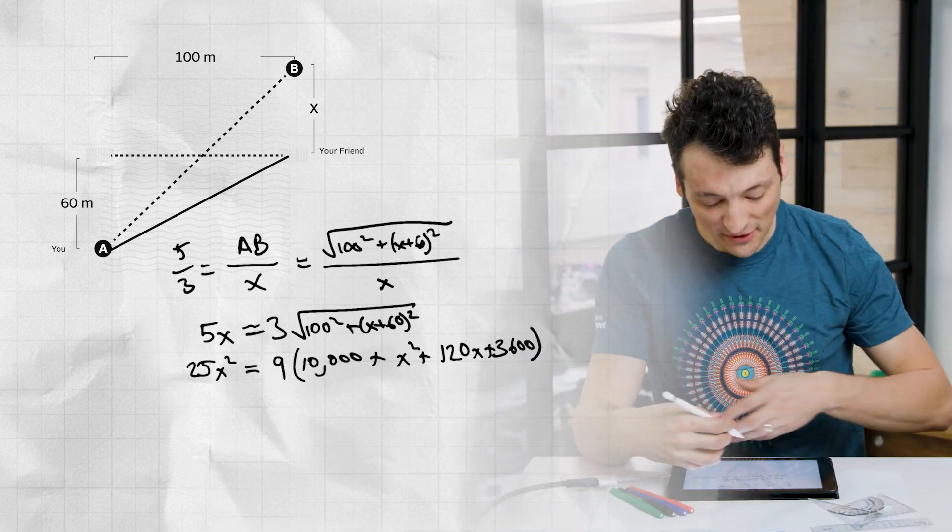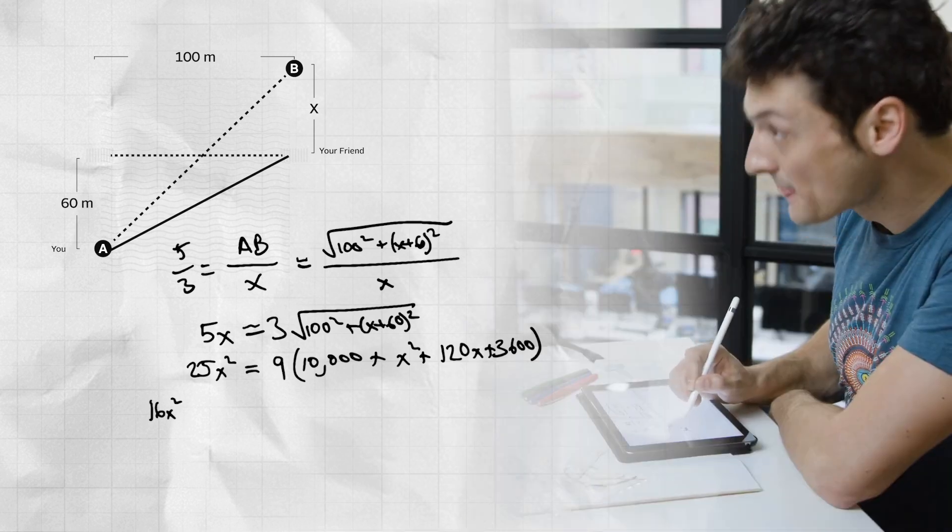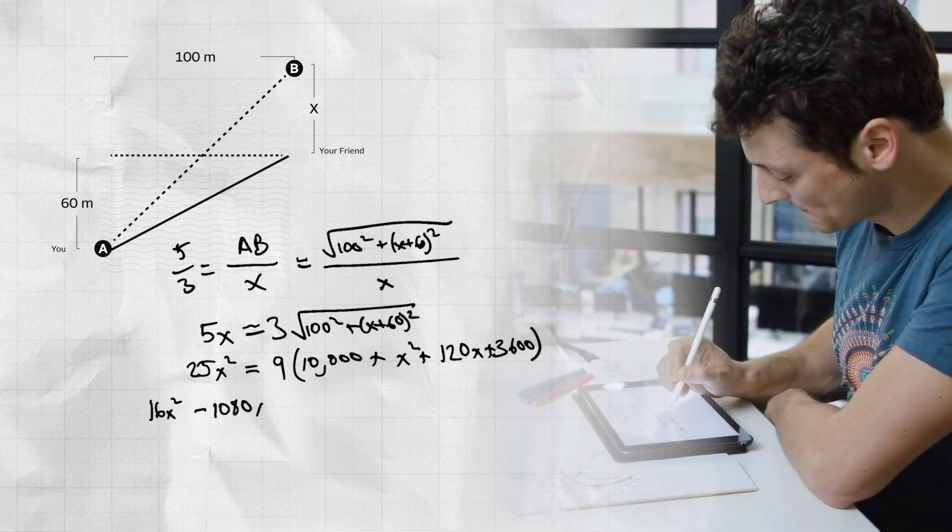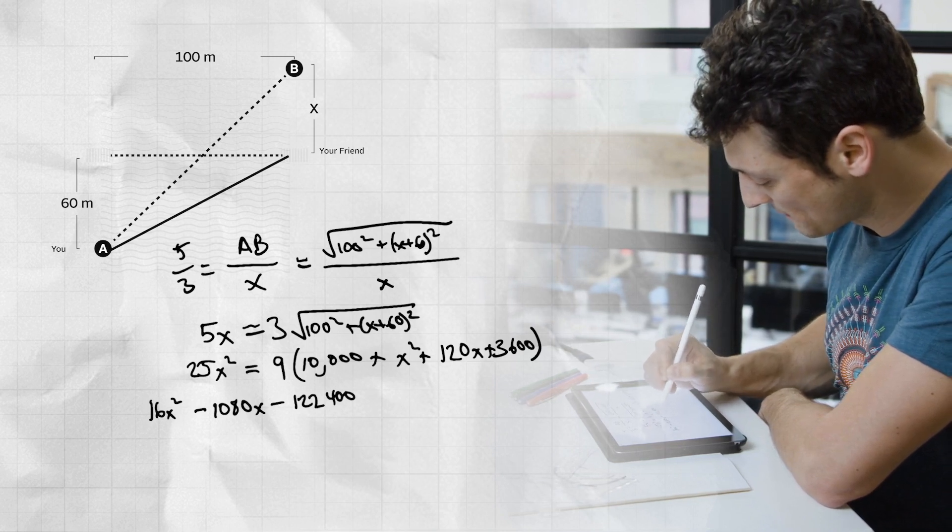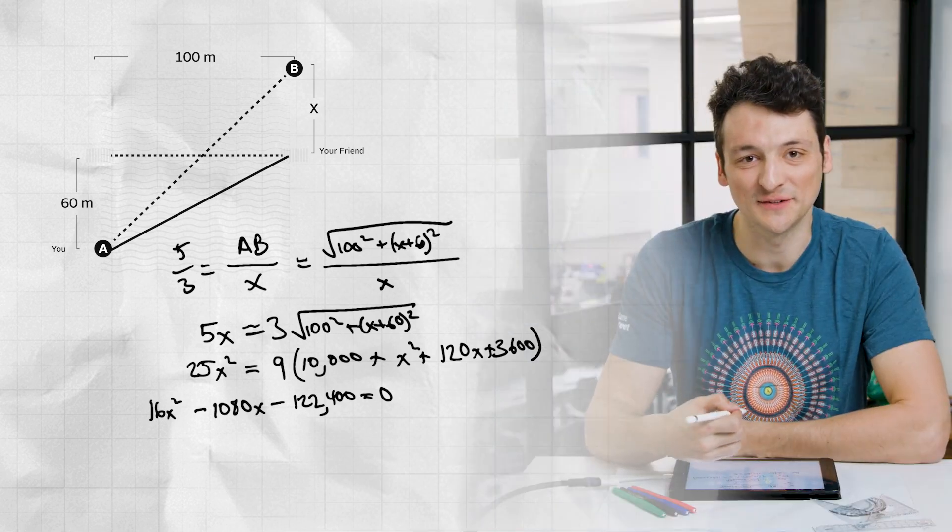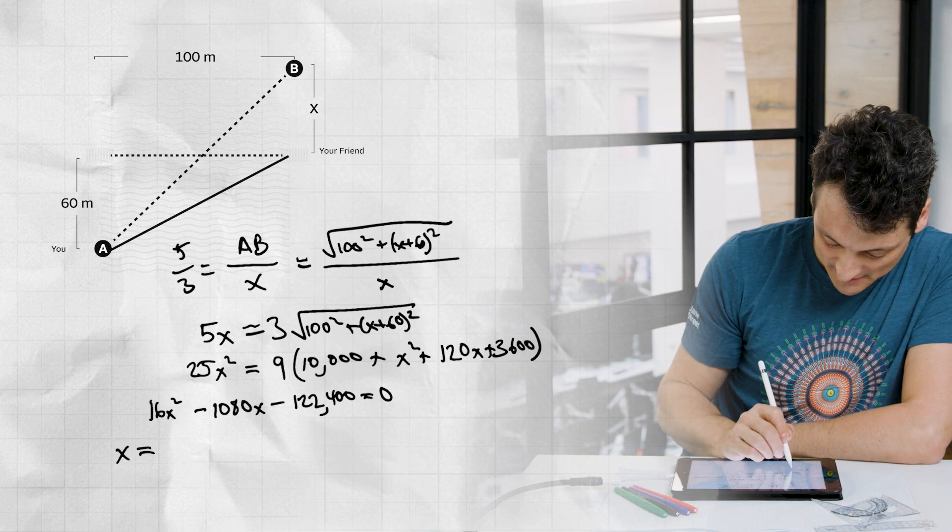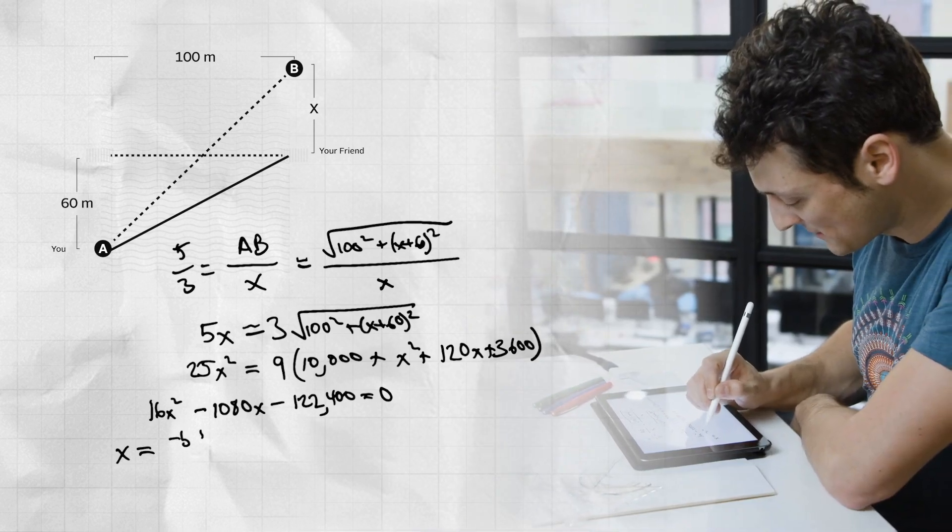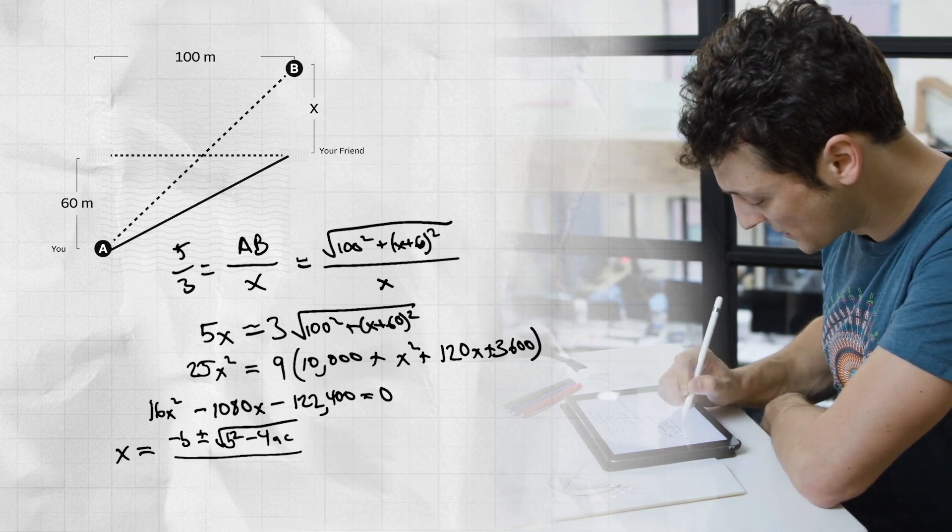Now we can collect all terms on the left to get 16x squared minus 1080x minus 122,400 equals zero, which we can then solve using the quadratic formula. So x equals negative b plus or minus the square root of b squared minus 4ac over 2a.